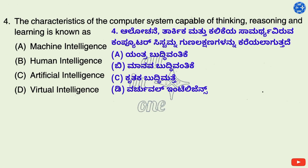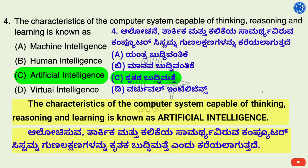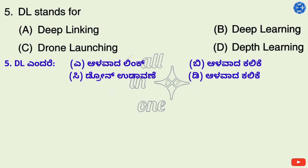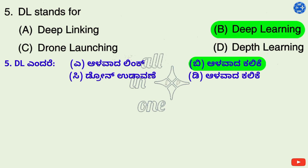Question 4. The characteristics of a computer system capable of thinking, reasoning, and learning is known as — Options: A. Deep linking, B. Deep learning, C. Drone launching, D. Depth learning. Right answer is B: Deep learning.